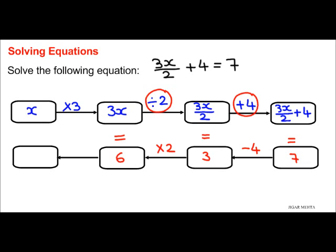Next, opposite of multiply by 3 is division by 3. So 6 divided by 3 will give me 2. So x equals 2.